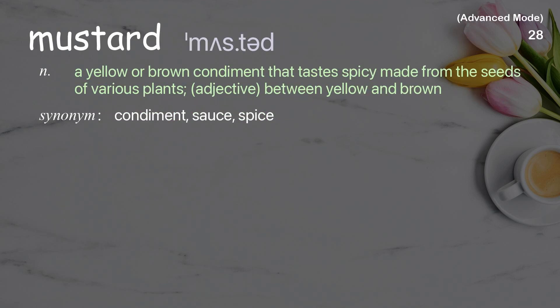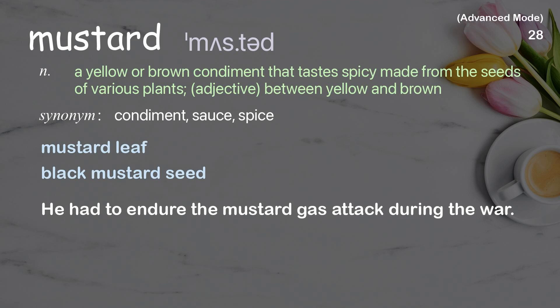Mustard: a yellow or brown condiment that tastes spicy, made from the seeds of various plants. As an adjective, a color between yellow and brown. Examples: mustard leaf, black mustard seed. He had to endure the mustard gas attack during the war.